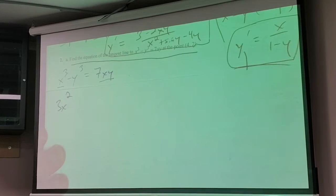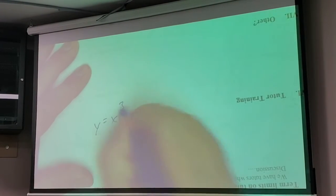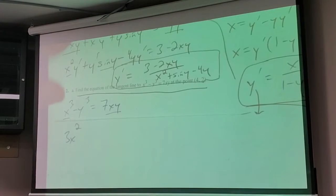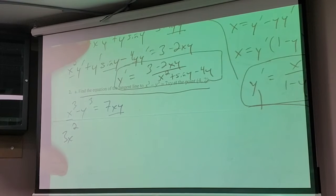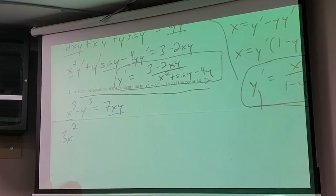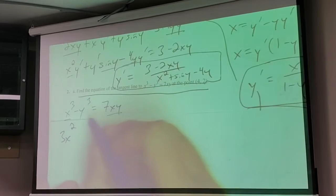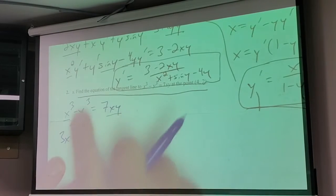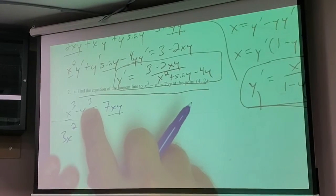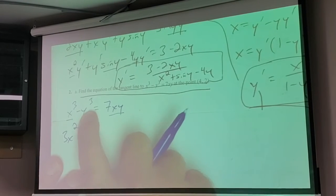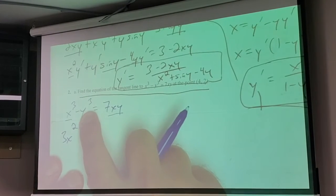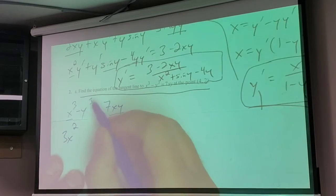Wait — if I give you y equals x cubed, what is y prime? Three x squared — that is it right there. The derivative of x cubed is three x squared, no question. But the inside of this guy is more than just x — it's some function of x. So I'm going to have to do the chain rule because I have an inside function, but the outside function is just the cube.